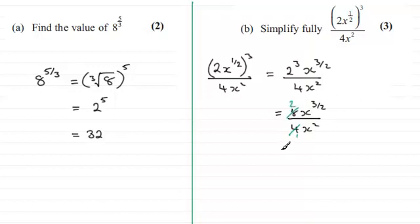Now at this stage you've got two options. What you could do is you could just simply subtract the powers. We've got our 2 here but subtracting the powers 3 over 2 or 1 and a half take away 2 leaves you with minus a half. So you've got 2x to the power minus a half.